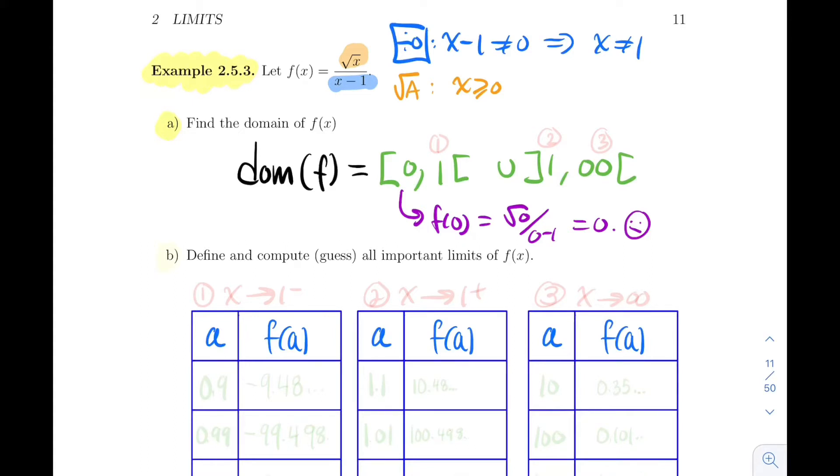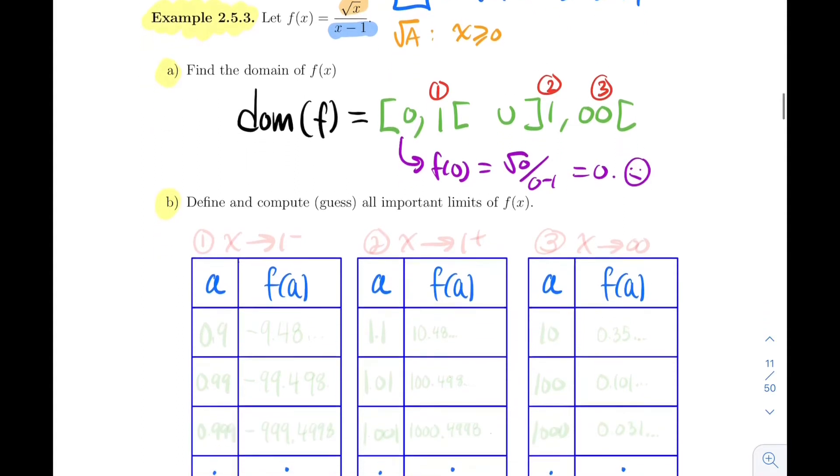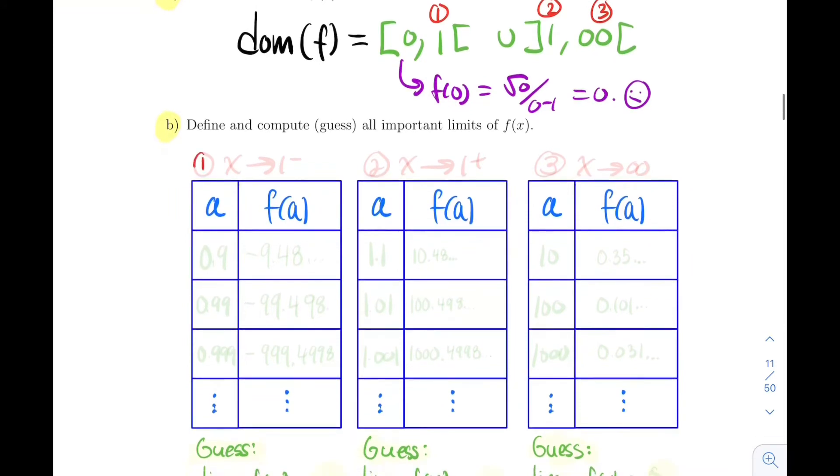The important limits here are the open endpoints. I'll do the left side of 1 first, then the right side, and then to infinity. Let's move and guess together. The important limits, three important limits. The first one I'm going to approach 1 from the left, the second one I'm going to approach 1 from the right, and then the last one will be the one going to infinity, x going to infinity.